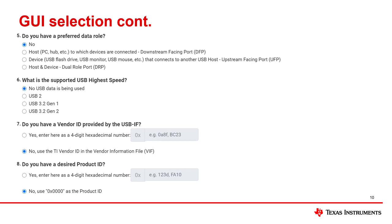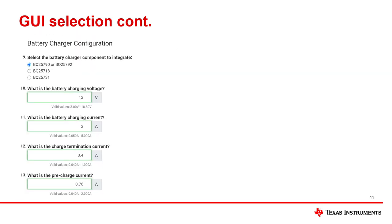We are choosing to use the battery charger feature specifically. Select no for questions 7 and 8. Next, we will configure the charger parameters. First, select the BQ25792 as the battery charger. Then select a 12-volt battery, 2,000 milliamp charge current, 760 milliamp pre-charge current, and 400 milliamp charge termination current to configure the desired charge parameters.